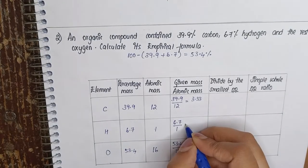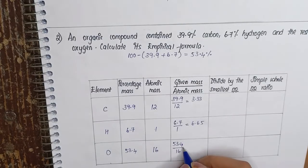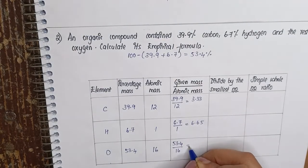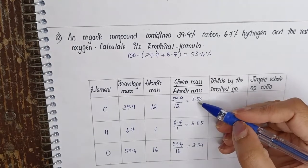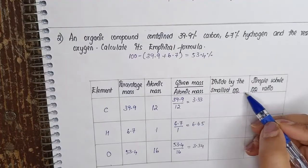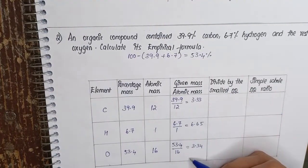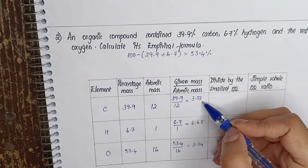For hydrogen you get 6.65, and for oxygen you will get 3.34. This is the number of moles for each element. Now in the next table it says divide by the smallest number. From column 4, which one is the smallest number? 3.33 is the smallest number.